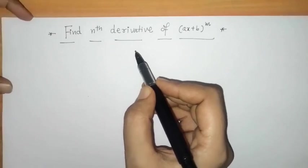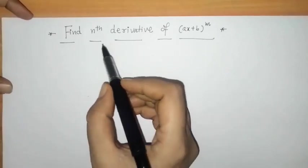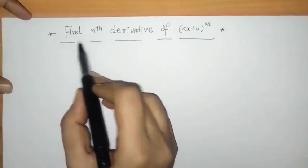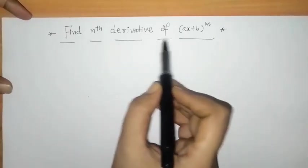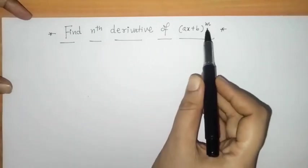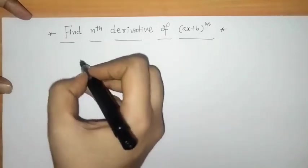Hello everyone, welcome to Unlock Maths. Today we have to find the nth derivative of (ax + b) raised to m.